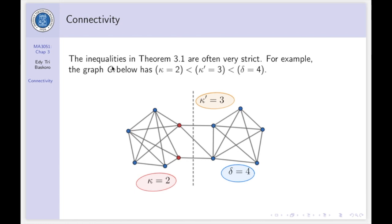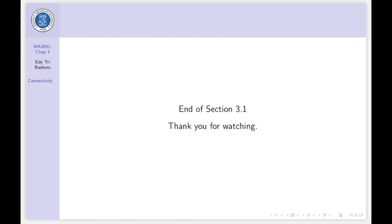The inequalities in Theorem 3.1 are often strict. For example, graph G below has connectivity 2 — removing those two vertices destroys connectivity — and edge connectivity 3, because at least three edges must be removed. But the minimum degree of this graph is 4. Thank you very much and wassalamu alaikum warahmatullahi wabarakatuh.